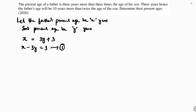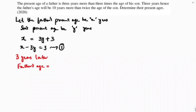For the second equation, 3 years hence — that is, 3 years later — the father's age will be x plus 3, and the son's age will be y plus 3.